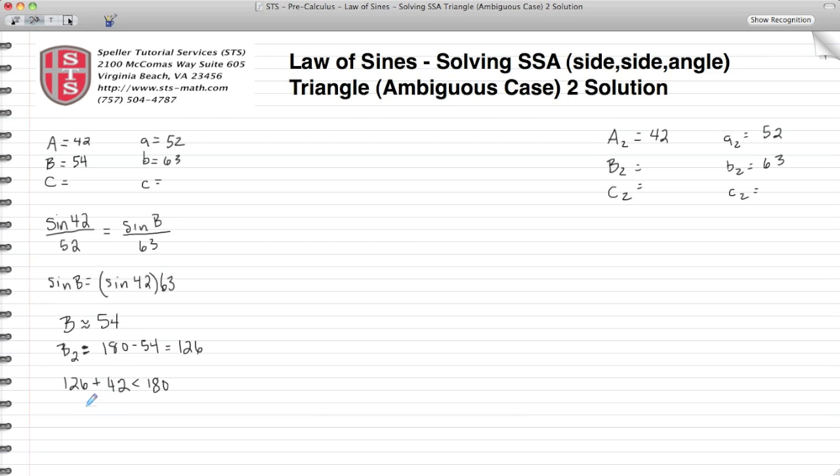And in doing so, when we add these two numbers together or evaluate, we get 168, and we see that it is less than 180. So we know that the measure of 126 degrees is a valid measure for the second possibility for the measure of angle B. So we're going to add the 126 degrees here.